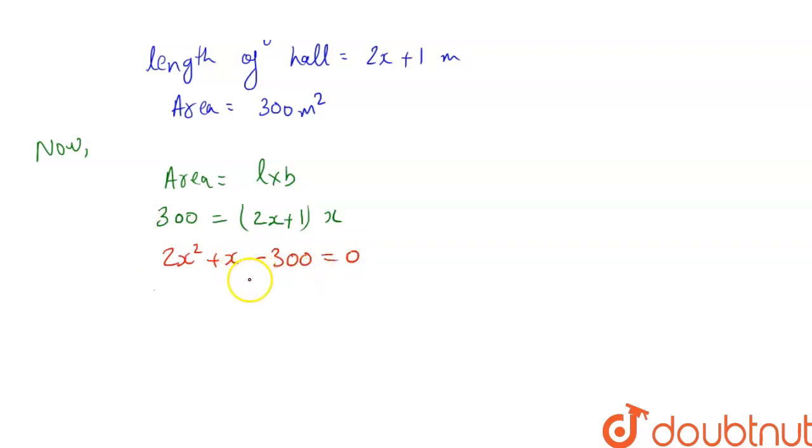Now we will solve this by splitting the middle term. So, the factors become 2x squared plus 25x minus 24x minus 300 equals 0.